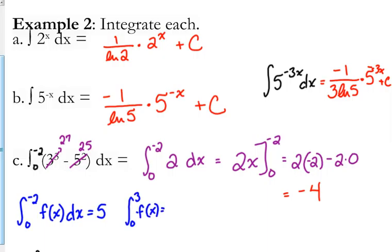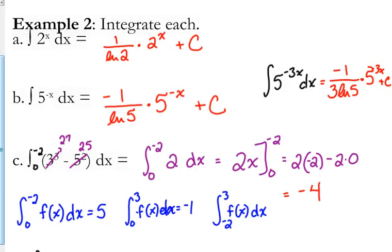I wouldn't flip it. Since I know the function and I'm evaluating it, I'm just going to evaluate it like any other definite integral. The only time I'm going to worry about flipping things around is if they just told me that the integral from 0 to negative 2 of f(x) dx equals 5, and the integral from 0 to 3 is negative 1, and then asked what is the integral from negative 2 to 3 — that's when I have to flip it around.